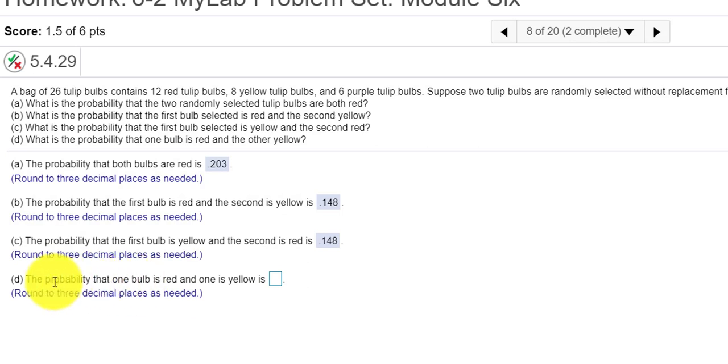Now, is the subtle word change here? There was order. It was first red, then second yellow, or first red, then second red. Now we're saying, what is the probability that either the first or second is red, and the first or second is yellow? So if I pick the first one's red and the second one yellow, that's okay. Or the first one yellow and the second one red, that's okay.